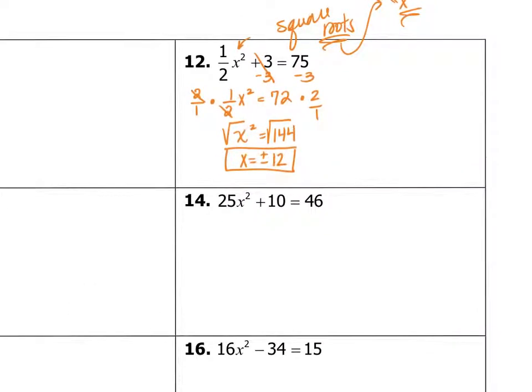If we take a look at number 14, again we just have x², and the rest is plain numbers, so we're going to try isolating x² and using square roots. Subtract 10 on both sides, so 25x² equals 36.